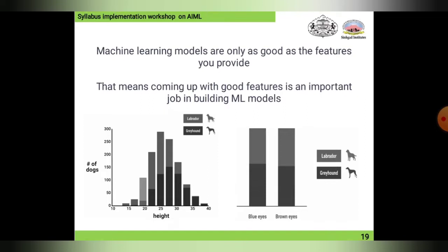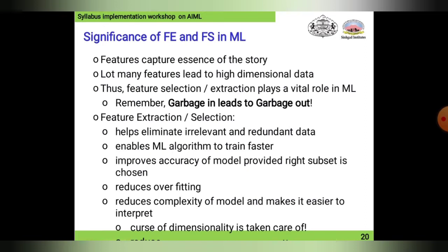Plotting dogs of heights versus other dogs, we can differentiate Labrador and Greyhound. On the right side of the pattern, we can see blue-eyed dogs and brown-eyed dogs, again categorized using a bar chart — Labrador shown in light gray shade and Greyhound in dark black shade. This shows how we can categorize dogs using features like height or eye color.